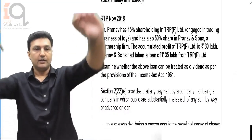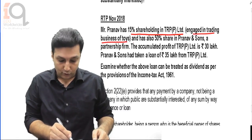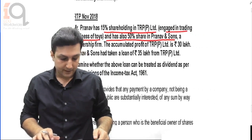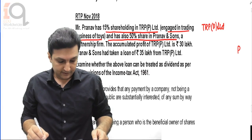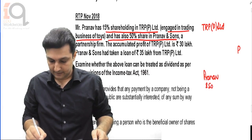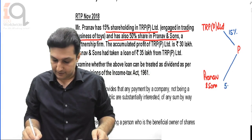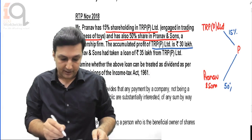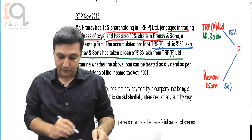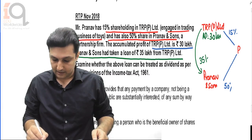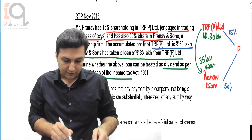The question says: Mr. Pranav has a 15% shareholding in TRP Private Limited, engaged in trading business of toys, and also has a 50% share in Pranav and Sons, a partnership firm. So let me draw this out: TRP Private Limited on one side, Mr. Pranav in the middle, and Pranav and Sons on the other side. Pranav has 15% holding in TRP and 50% share in Pranav and Sons. The accumulated profits of TRP Limited is 30 lakhs. Pranav and Sons has taken a loan of 35 lakhs from TRP Limited. Examine whether the above loan can be treated as dividend as per the provisions of the Income Tax Act.